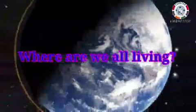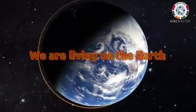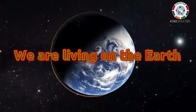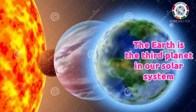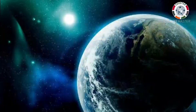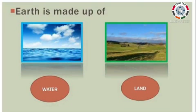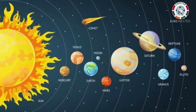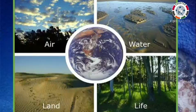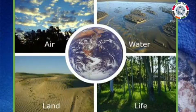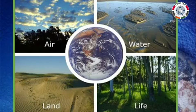Do you know where you live? Yes, we live on the planet Earth. The Earth is the third planet in our solar system. We are so lucky to live on Earth. The Earth is a heavenly body made up of land and water. Our Earth is different from the other planets. It has life — no other planet has life. It has air and water too.